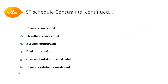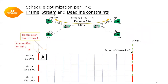Based on some constraints we will introduce in the coming slides, we solve the problem. There are six constraints: frame constraint, deadline constraint, stream constraint, link constraint, stream isolation constraint, and frame isolation constraint. Let's see how the frame, stream, and deadline constraints work in an example.